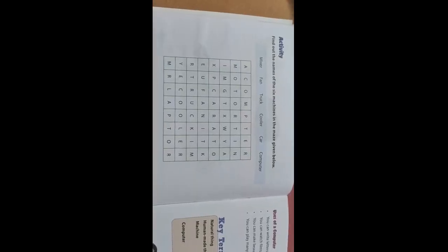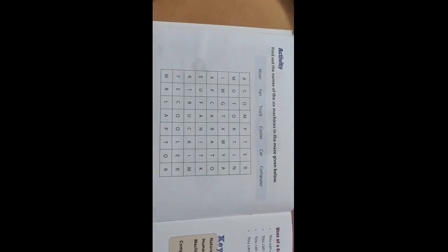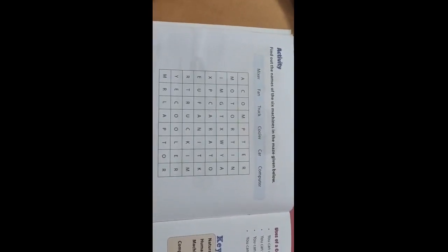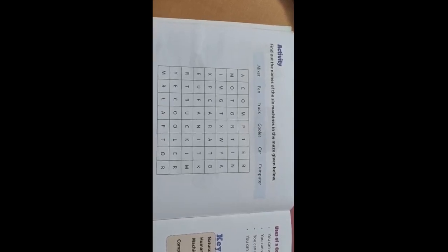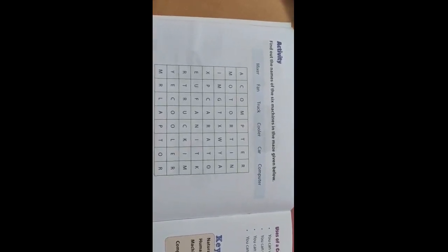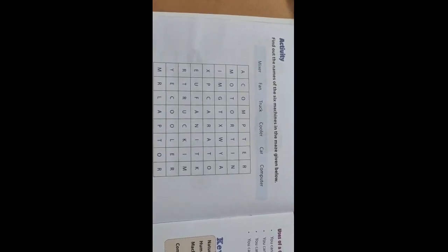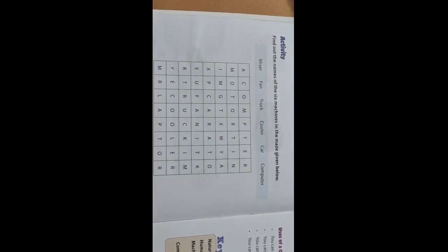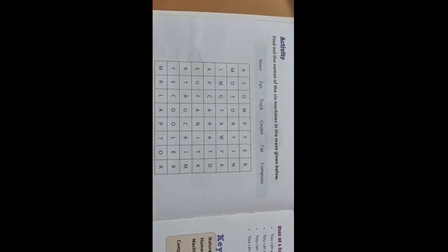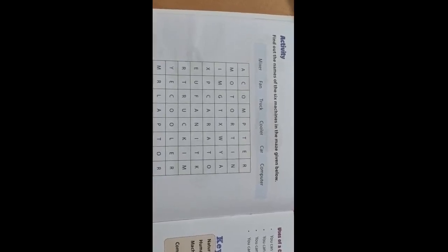Now dear children, if you remember, I gave you this activity to find six machines from this given table. The words were given: mixer, fan, truck, cooler, car and computer. So in today's class, we will find these words only from the given maze.